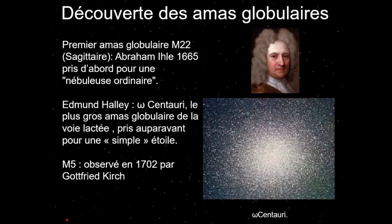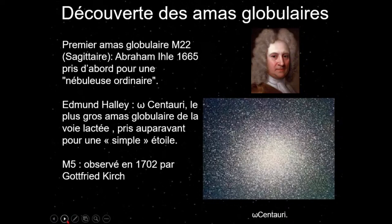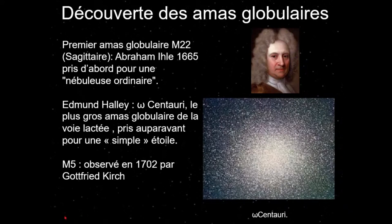Le premier amas repéré est M22, trouvé dans le Sagittaire par Abraham Ihle en 1665. Il n'avait même pas vu que c'était un amas d'étoiles — pour lui, c'était une nébuleuse. À l'époque, les instruments n'avaient pas beaucoup de pouvoir de résolution, on voyait une tache et on parlait de nébuleuse. Ensuite, l'Omega Centauri — le plus gros amas globulaire de la Voie Lactée — a été observé, puis M5 en 1702. C'est à la fin du XVIIe et début du XVIIIe siècle qu'on a commencé à observer les amas globulaires, grâce à une optique suffisamment performante.